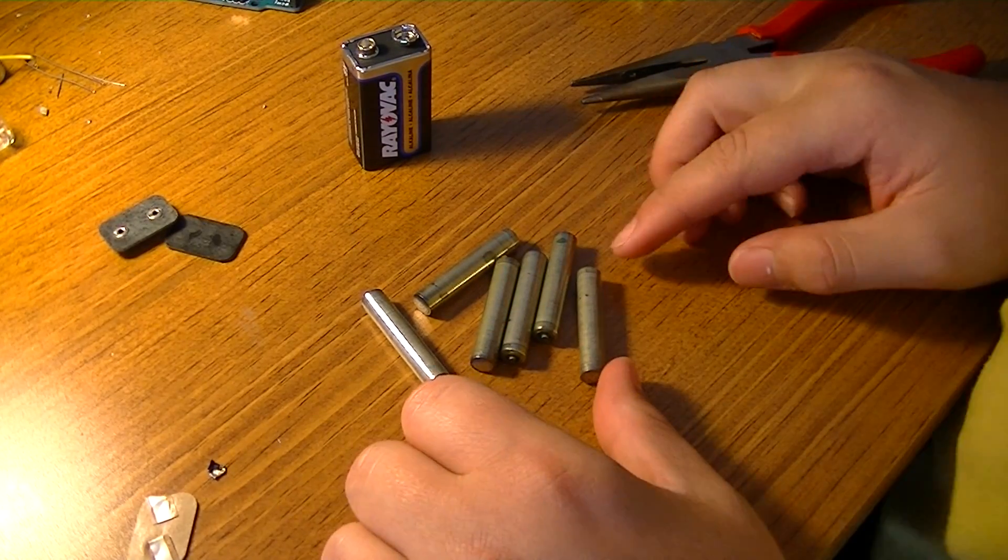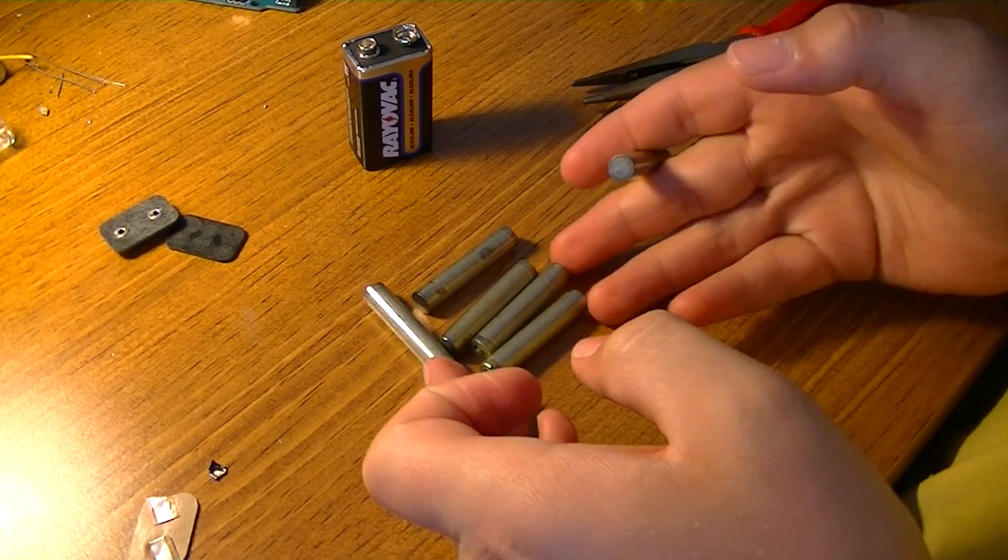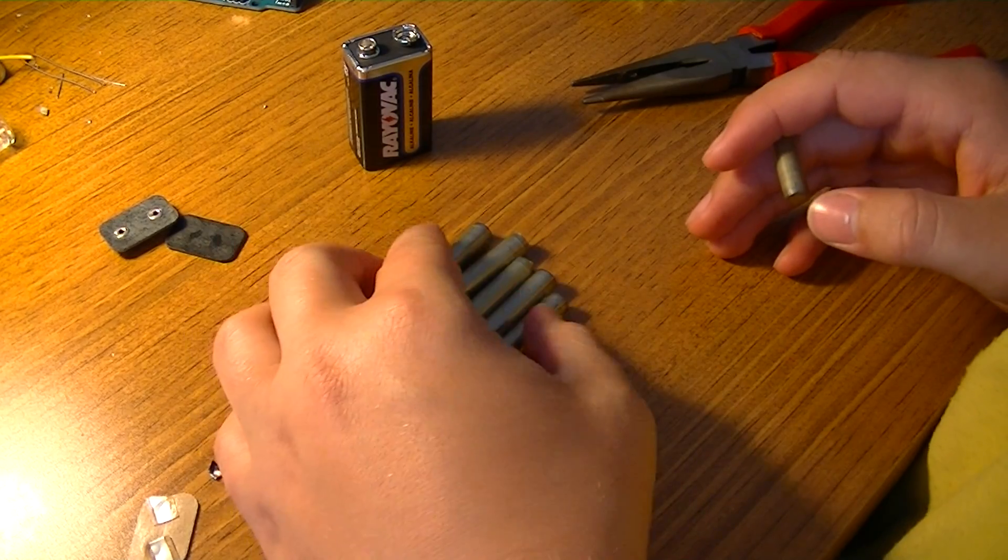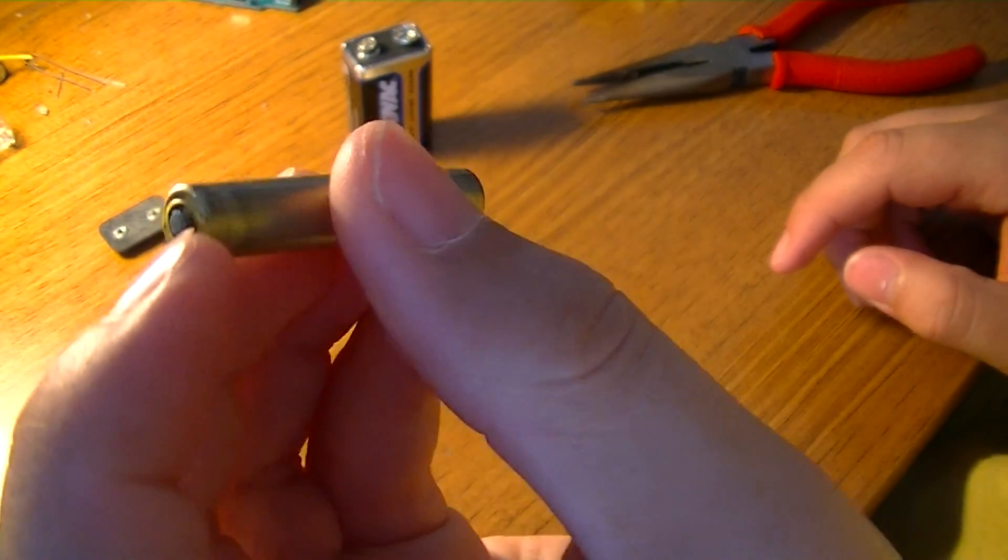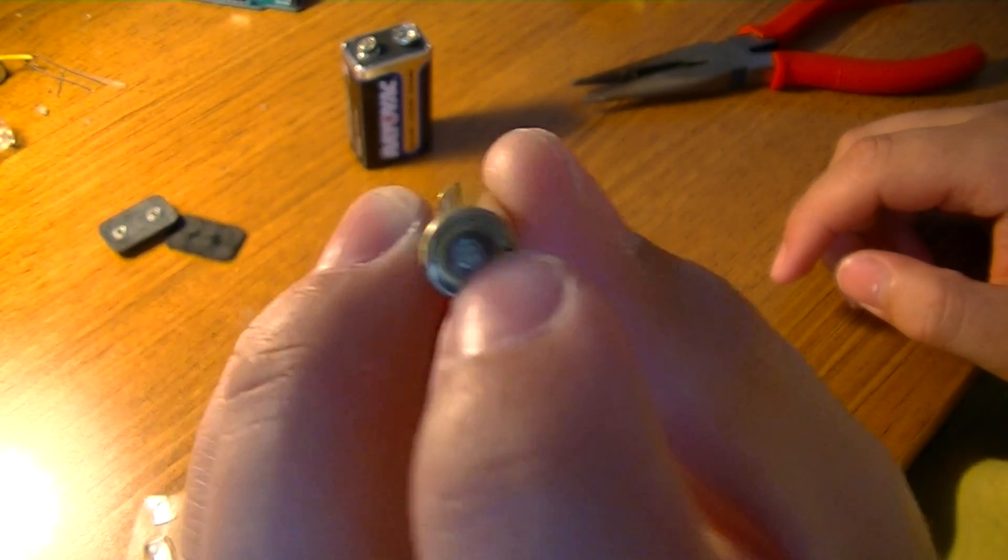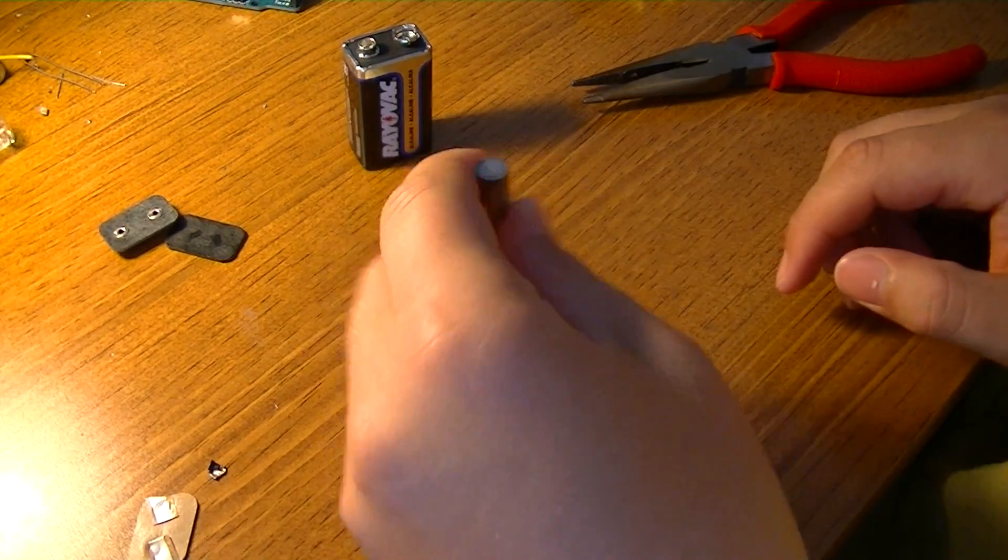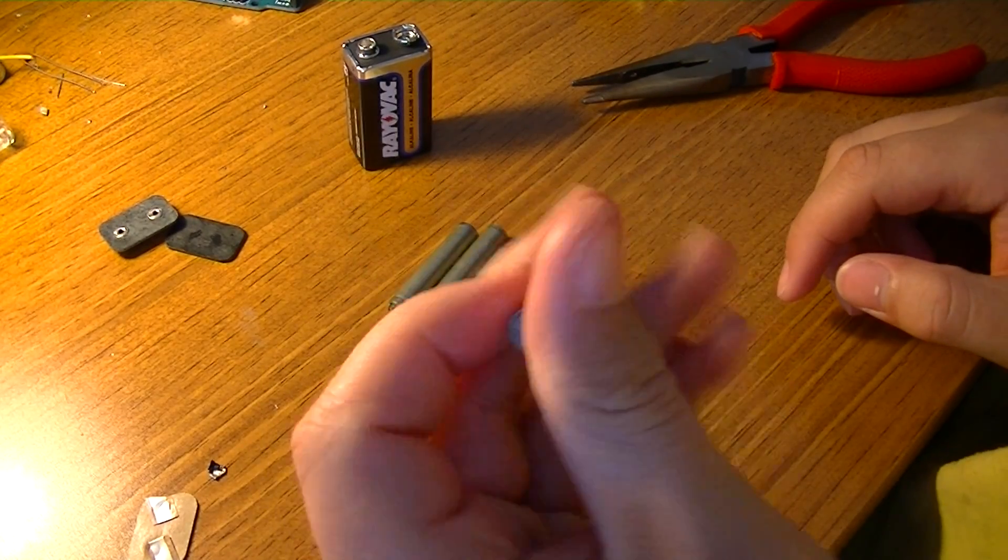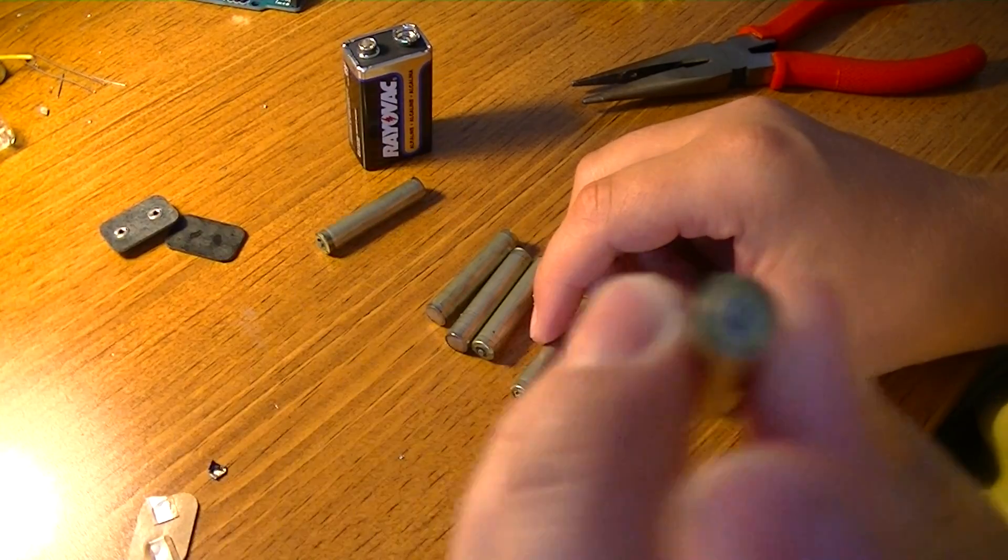So, this battery's already dead, so I'm not going to bother going through and testing these. But, these are quadruple A's. There's not much to say about them. One thing to notice is that this is actually the negative, not the positive. Usually, that is going to be your positive, but it is backward on these batteries. So, the flat side is the positive, and the pointed end is the negative.